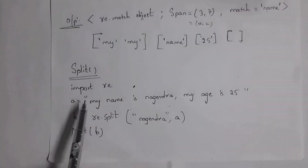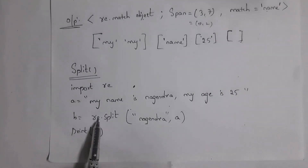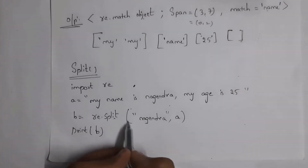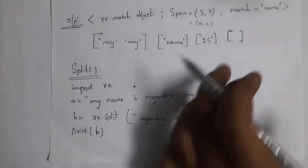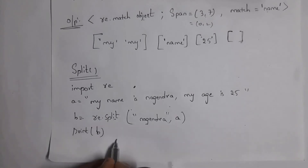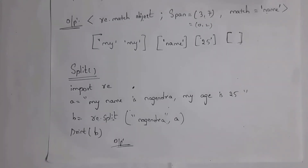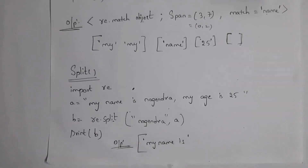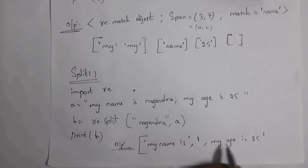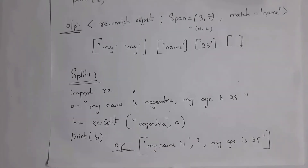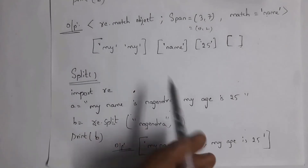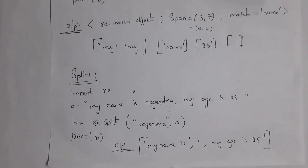Next is the split function. I write b = re.split('Nagendra', a). The split function is used to split a given string. When you write re.split with 'Nagendra', it removes 'Nagendra' and splits the string into two parts: one is 'my name is ' and the other is ', my age is 25'. This is the use of the split function.